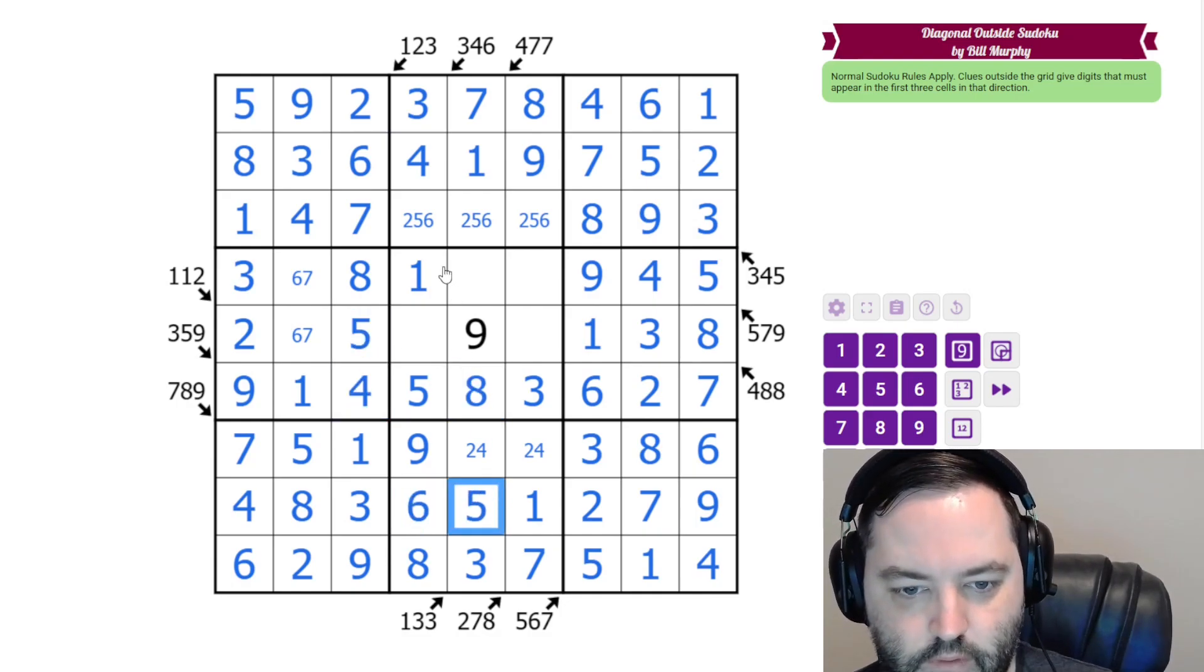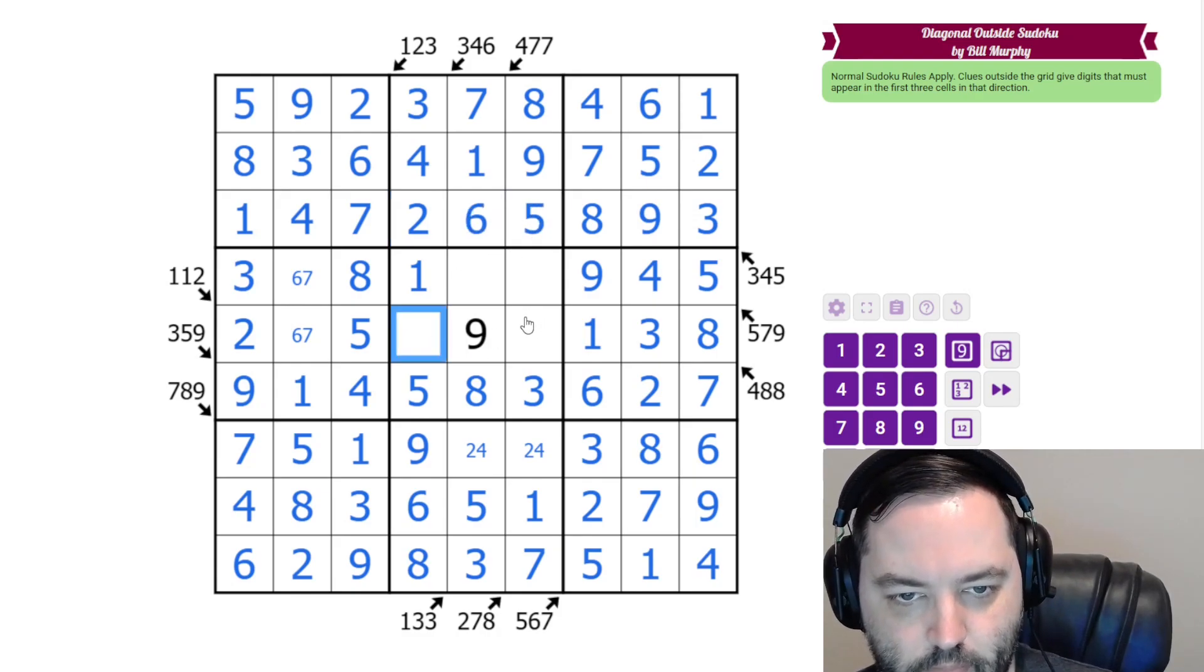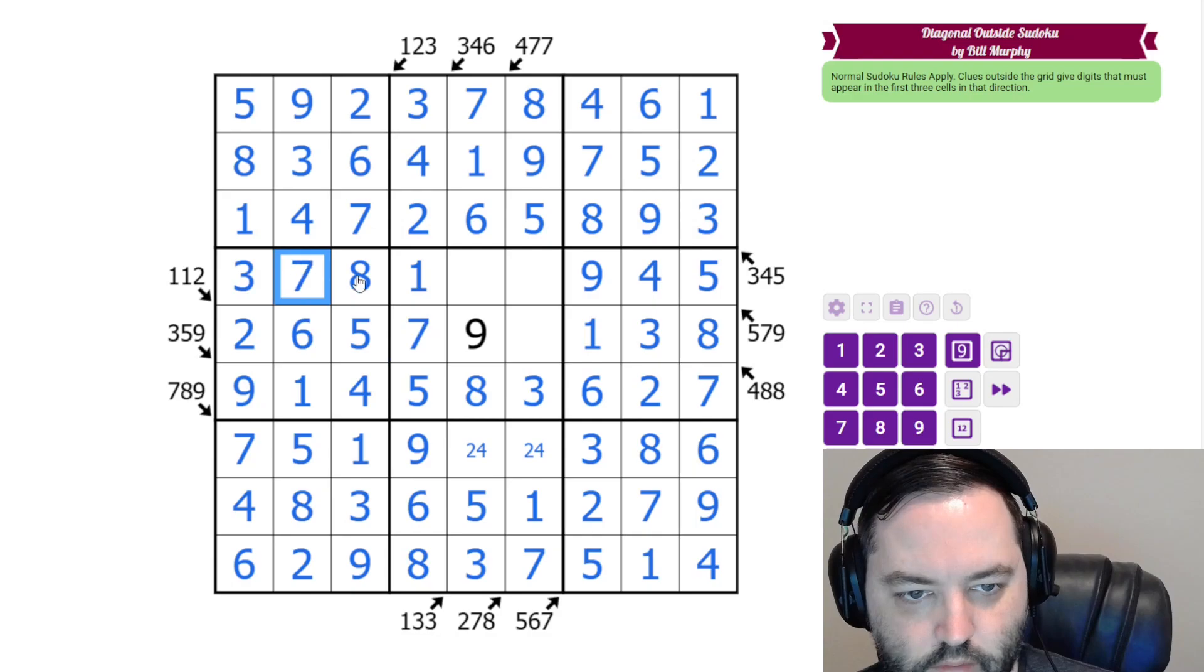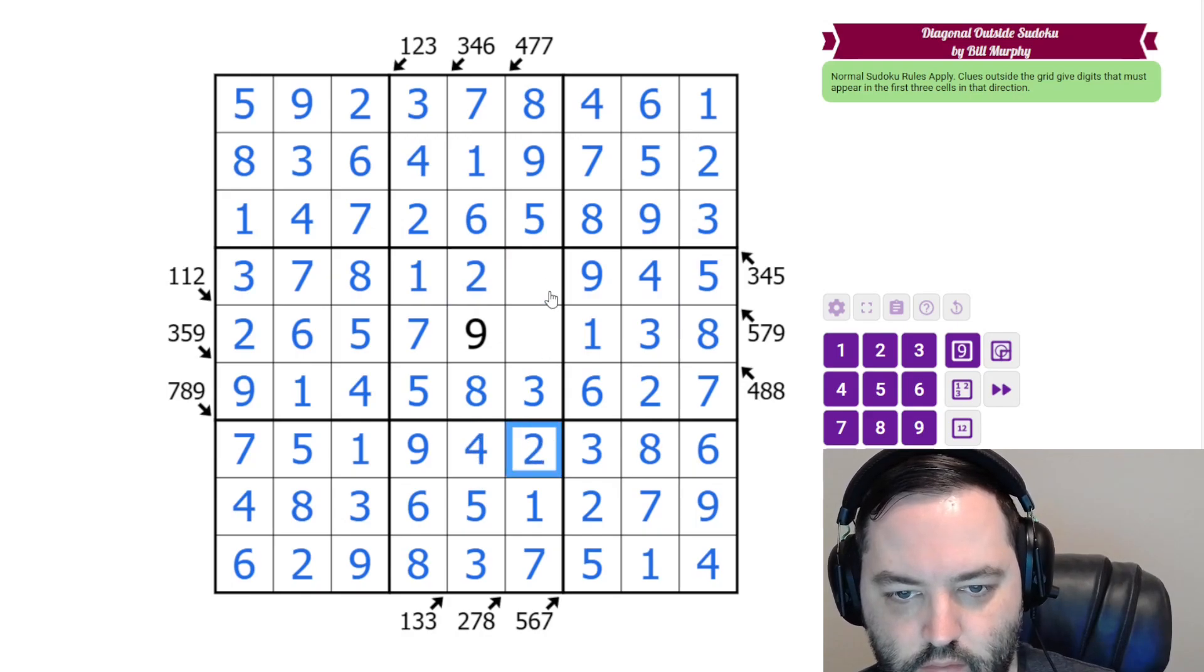This is 6 and 5. 5 and 6 here give us 2, 6, 5. Missing digit here is 7, resolving 6 and 7. These are 2, 4 in the column, but we have 4 there. And to finish off, we need a 6 and we need a 4.